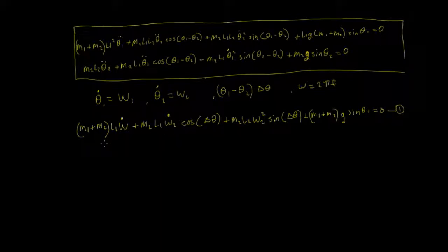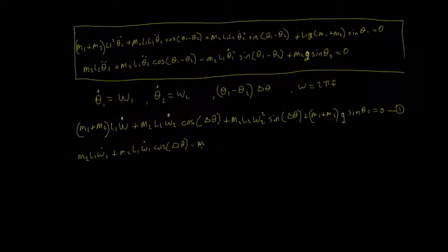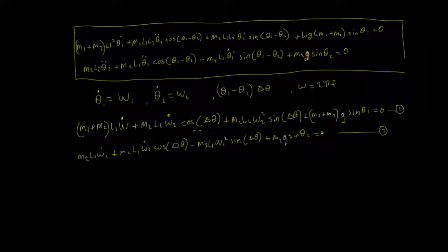Following the same routine for the second equation, we get: m2 l2 omega2_dot plus m2 l1 omega1_dot cos(delta_theta) minus m2 l1 omega1_squared sin(delta_theta) plus m2 g sin(theta2) equals zero. We'll call that equation number two.